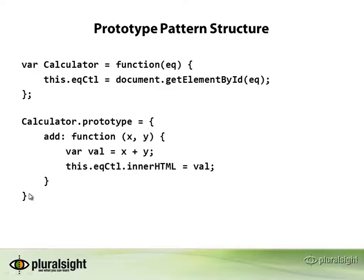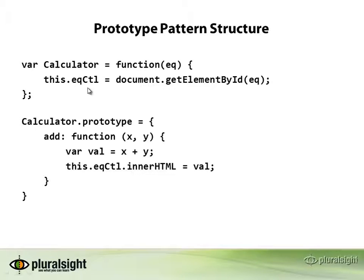You'll notice I'm actually using an object literal here — here's the start of it, here's the end of it, here's the name, and the value goes from here down to here. I only have one in this example, but when I get to the demos I'll show you some others. In this case, the add function is going to take an X and a Y, we'll simply add those together, and then we're going to assign the value to the eqctl that was passed or assigned up in the constructor area.